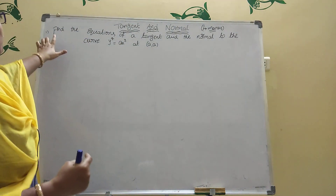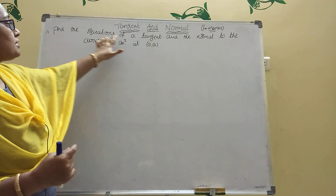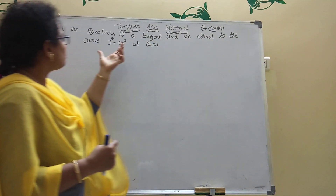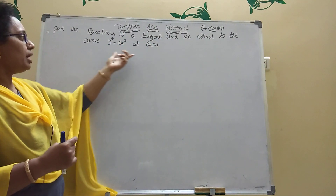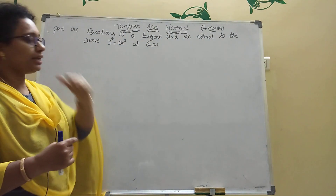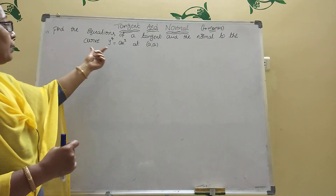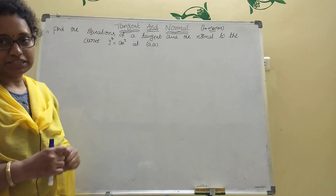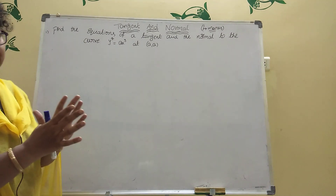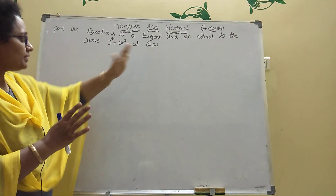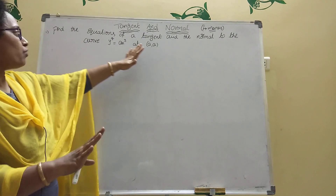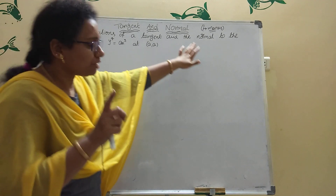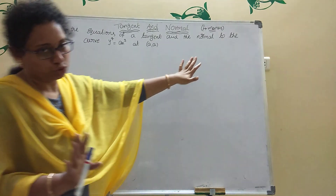Find the equations of a tangent and the normal to the curve y⁴ = ax³ at the point (a, a). Here one curve is given. Then at that point you should find the equation of the tangent and the equation of the normal. That is the question.